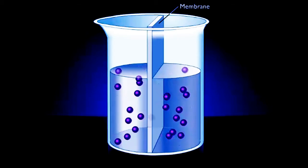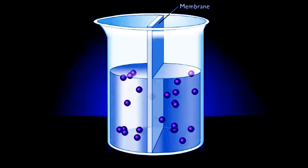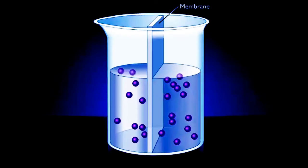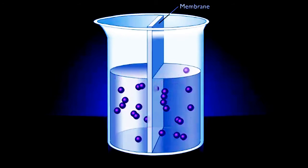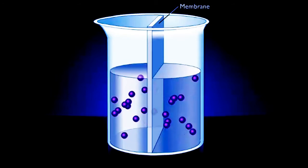Diffusion is the net movement of molecules down a concentration gradient. This process allows small molecules, such as oxygen and carbon dioxide, to cross the plasma membrane.